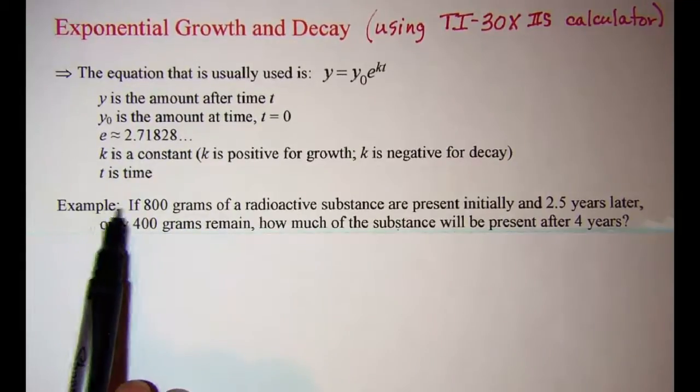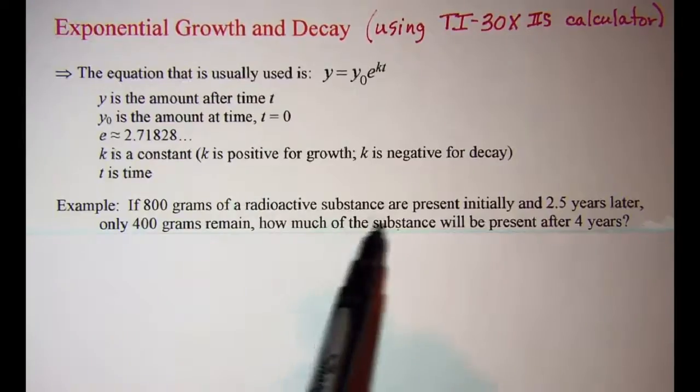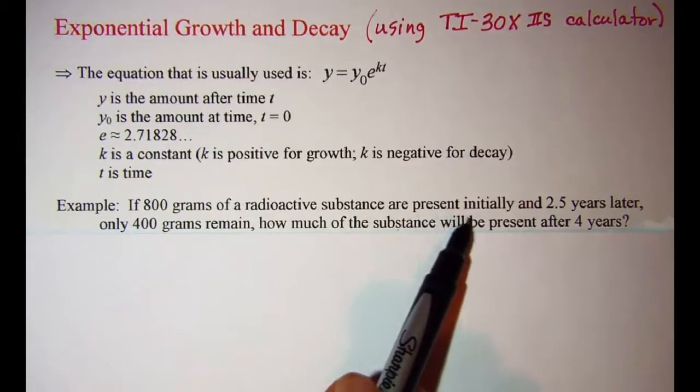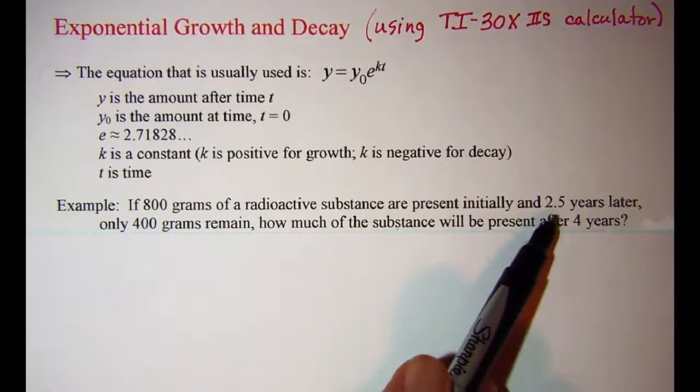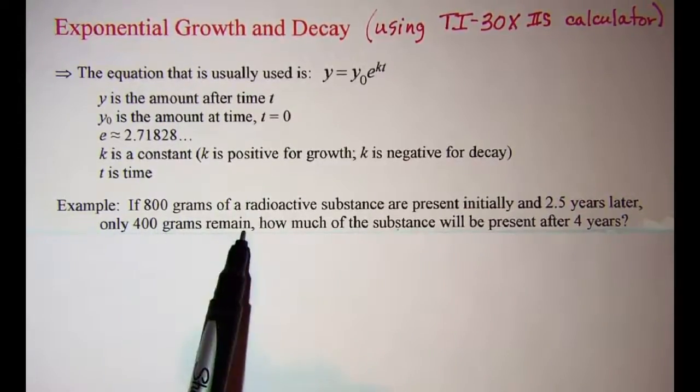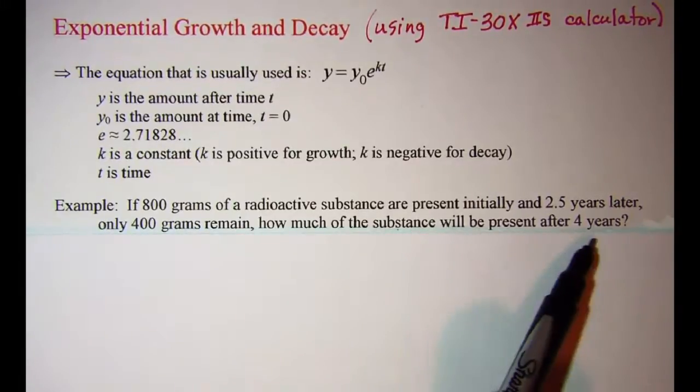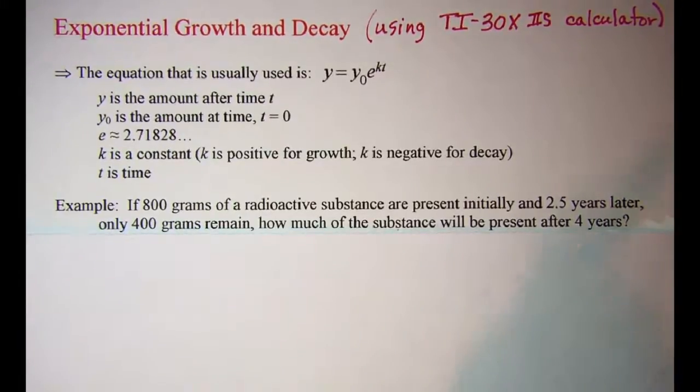The example that we'll be working is if 800 grams of a radioactive substance are present initially and 2.5 years later only 400 grams remain, how much of the substance will be present after 4 years? Now this type of problem needs to be done in two steps.